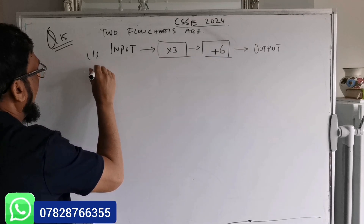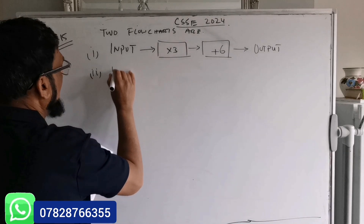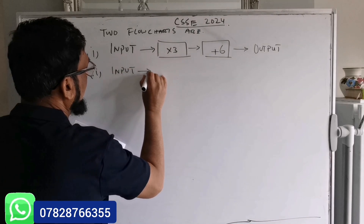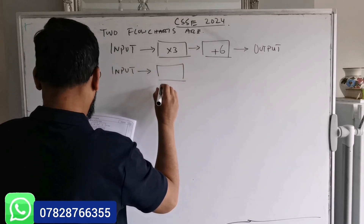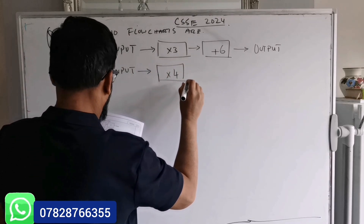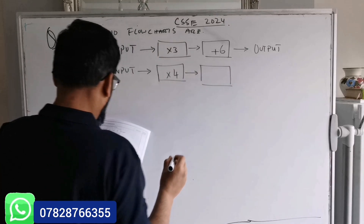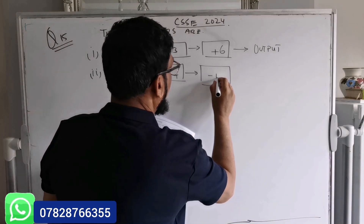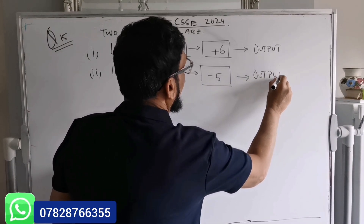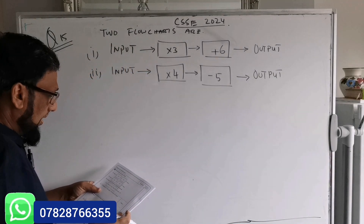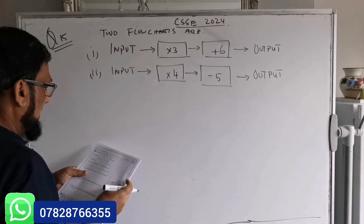Flow chart number two: same input, arrow, then a box 'times by 4', arrow, then a box 'minus 5', then output. They also give you an example.